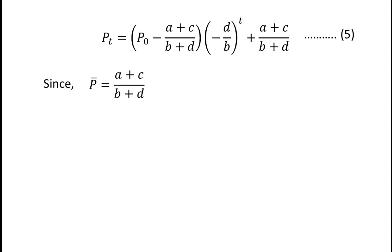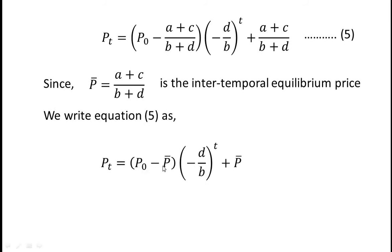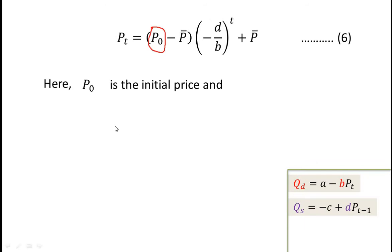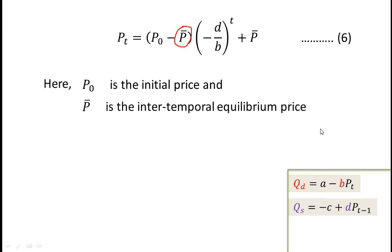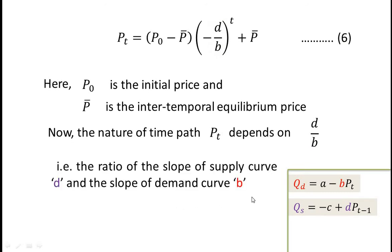Since p̄ equals (a+c)/(b+d) is the intertemporal equilibrium price, we rewrite equation 5 as: pt equals (p₀ minus p̄)·(−d/b)^t plus p̄. This is equation 6, the time path of the cobweb market model, where p₀ is the initial price and p̄ is the intertemporal equilibrium price. The nature of the time path of pt depends on d/b — the ratio of the slope of the supply curve d to the slope of the demand curve b.